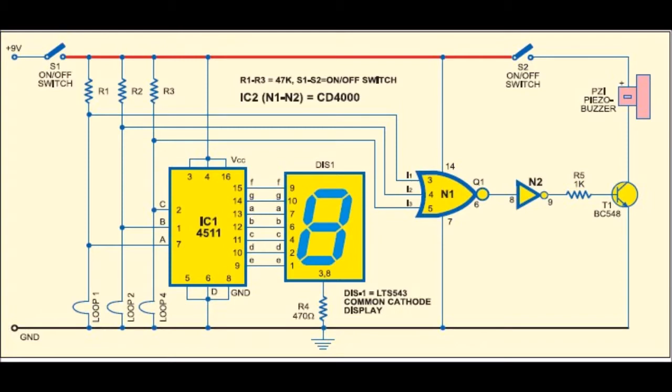The D input of IC1 is grounded permanently. The loops are also connected to a dual 3-input NOR gate and inverter CD4000 IC2 to activate the alarm.